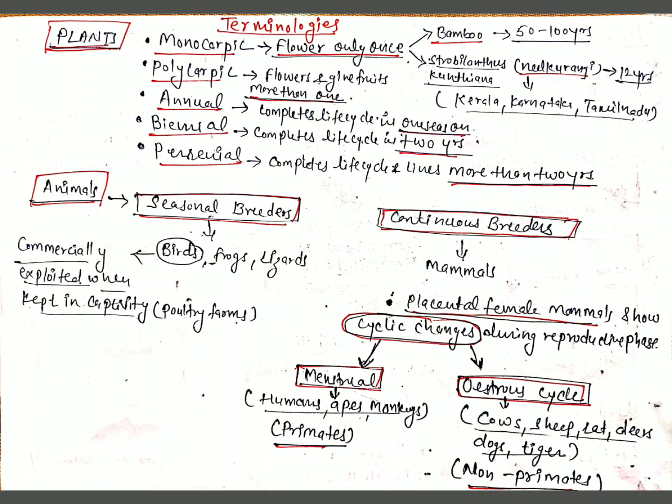The next terminology is annual: a plant that completes its life cycle in one season. Biennial means it completes its life cycle in two years. Both annual and biennial plants flower only once. Perennial plants complete their life cycle and live for more than two years, and mostly they are polycarpic. Some plants flower throughout the year and others show seasonal flowering.